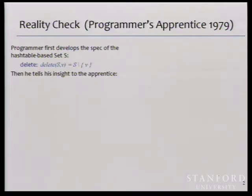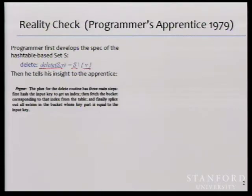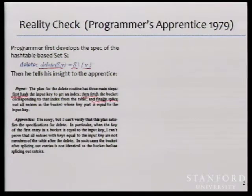I want to look at 30 years ago and examine a project that proposed something very interesting — the Programmer's Apprentice project out of MIT, which showed how programs would be developed if they succeeded. The idea was that the programmer would write the specification. What you see here is a specification of how to delete from a hash-based set: after you delete value V, the result is a set that is what it was before except minus that element V.